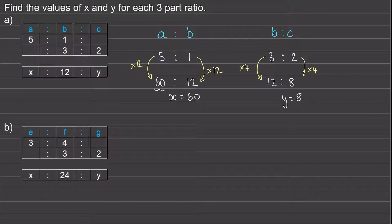For our second question we've been given the ratio e to f to g, where e to f is three to four and f to g is three to two, and we've been given a common value for f which is 24. Do you want to try and work out the value of e and g when f is 24? You can pause the video and when you come back we'll go through a worked solution.